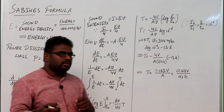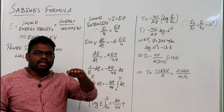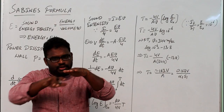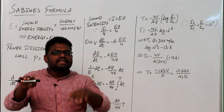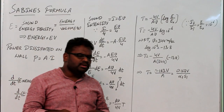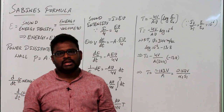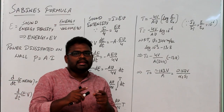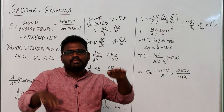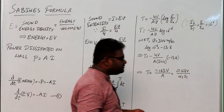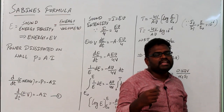Reverberation time is the time taken for the average sound intensity to fall to inaudibility. During this process, to fall from audibility to inaudibility, it will take some time — this time taken is called reverberation time. We can also define it as: the final intensity should be one millionth of its initial intensity. To fall from initial to final intensity, it will take some time — that time is called reverberation time.